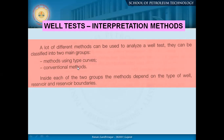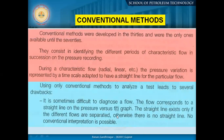These methods can be classified into two main groups: old methods using type curves, and the conventional method. Conventional methods were developed in the 1930s and were the only ones available until the 1970s. They consist of identifying different periods of characteristic flow in succession on the pressure record. The pressure variation is represented on a time scale adapted to produce a straight line for a particular flow. We change either the x or y value — delta-P, the first derivative, or second derivative — and in time we use elapsed time, t, or Horner time.